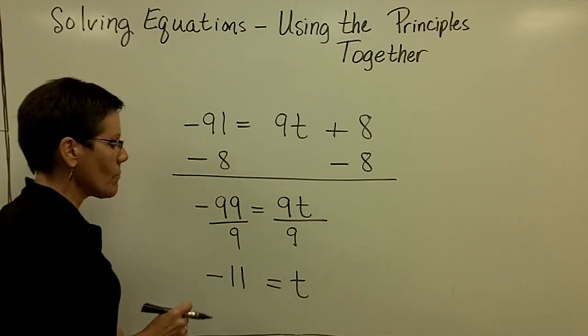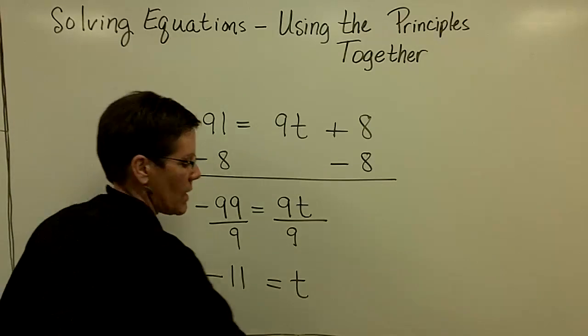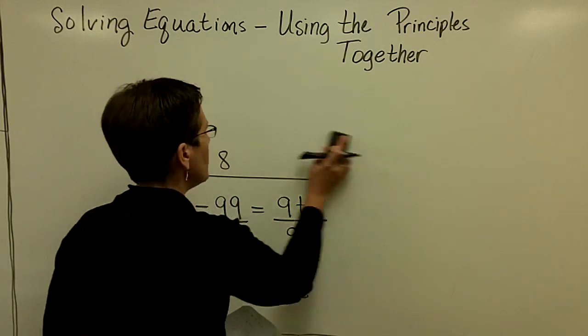99 divided by 9 is 11. I'm not taking the time to check them all the time. This wouldn't be a check. Let's go ahead and look at another.